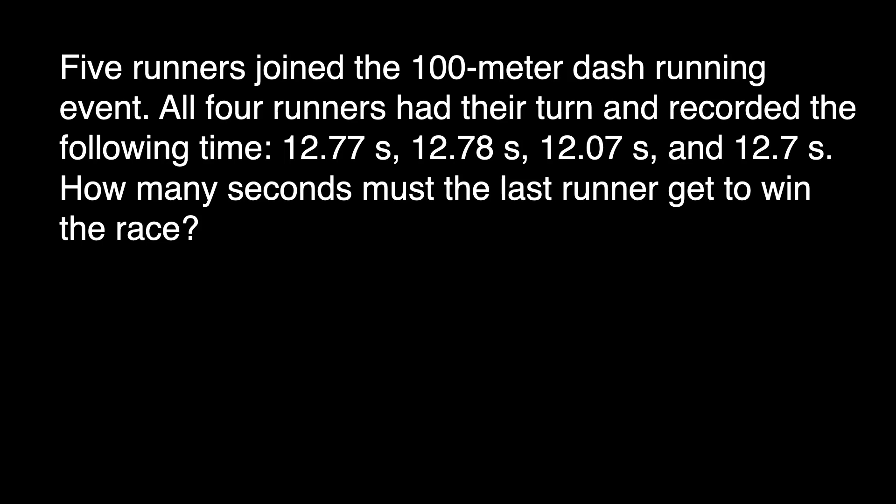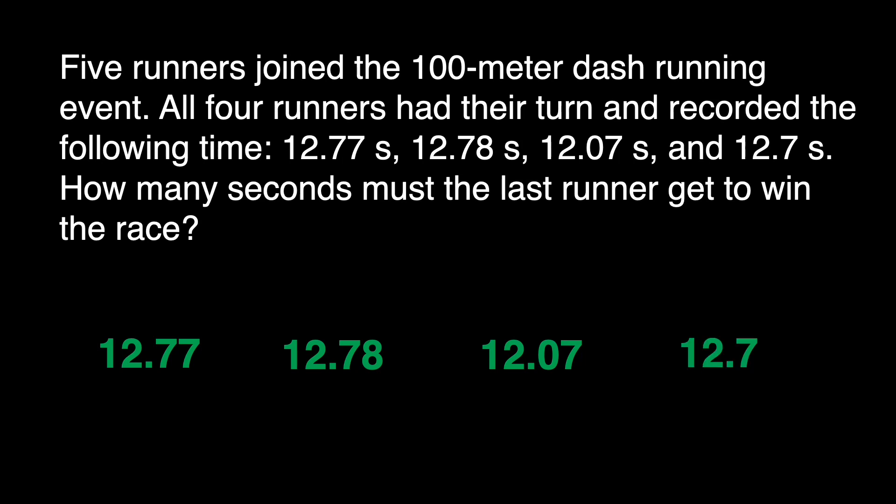We have a problem here. 5 runners joined the 100 meter dash running event. All 4 runners had their turn and recorded the following times. How many seconds must the last runner get to win the race? We are given the following: 12 and 77 hundredths, 12 and 78 hundredths, 12 and 7 hundredths, and 12 and 7 tenths.